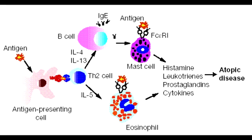Define atopic or atopy. Atopy or atopic syndrome is when somebody has a predisposition towards developing a certain type of hypersensitivity reaction. To help understand this, just think about how people are allergic to peanuts and things like that — this would be a Type 1 Hypersensitivity Reaction.